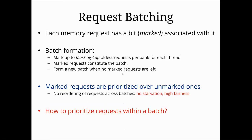Once we've dealt with all our marked requests, we move to the new batch — we traverse the entire request list and mark the ones we want to handle. One key point is that we don't reorder across batches, even if one thread sends in a ton of requests. We only look at our individual batch. This brings us to the question of how to prioritize requests within a batch — we can use any of the techniques we've seen before.